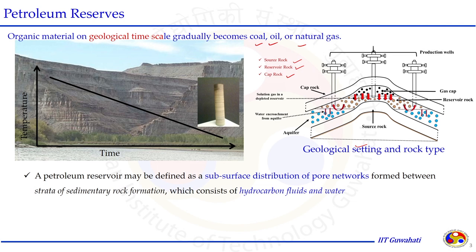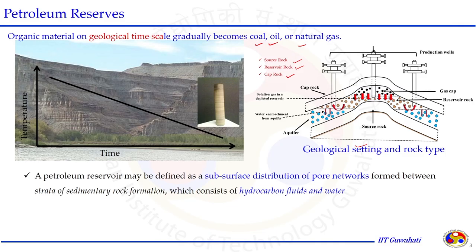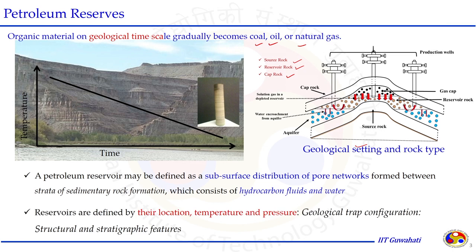Petroleum reservoir may be defined as a subsurface distribution of the pore network formed between strata of sedimentary rock formation, which consists of hydrocarbon fluid and water. Water is always associated with the hydrocarbon fluid. This petroleum reservoir underneath the surface has pores connected to each other and the path is permeable. The geological formation has porosity and permeability, because of which a significant amount of recoverable hydrocarbon fluid is stored where we need to reach by drilling.